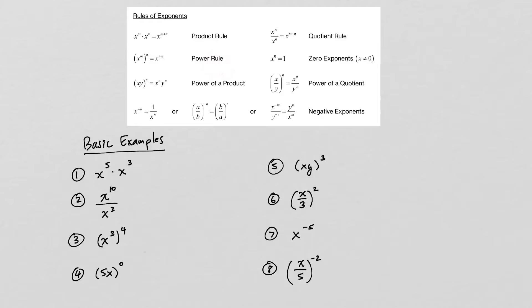Next we have the power rule: if you have an exponential expression such as x to the m power and you raise that to the n power, we multiply the powers — m times n. Then there's the zero exponent rule, which says that anything raised to the zero power is always equal to 1. This is only true if x is not zero — zero to the zero is undefined. But anything else raised to the zero power equals 1, and this is not intuitive, so that's why it's considered a rule.